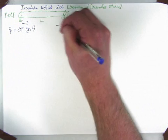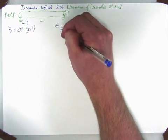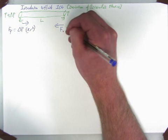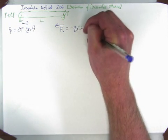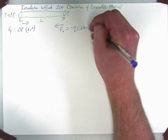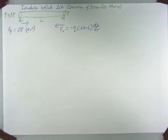The force due to viscosity is in that direction. F_v equals minus mu times 2 pi r L times dv/dr. So it's a change in velocity over change in radius.